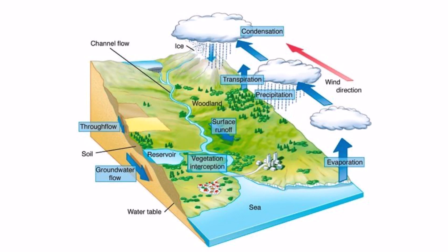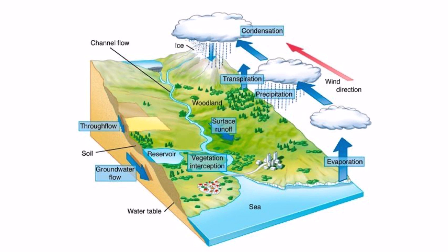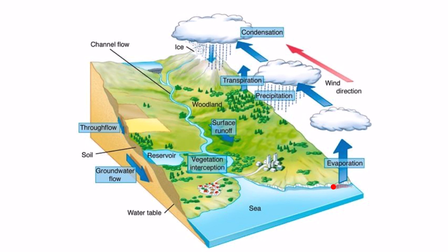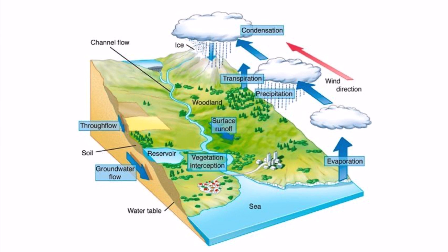It's useful to see a pictorial representation to understand how all the stores and transfers are linked. Because it's a cycle, you can start anywhere. Heat energy causes the water's temperature to rise, it becomes steam and evaporates up to form clouds. Water from clouds in the form of hail, rain, or snow are examples of precipitation. Through surface runoff, water runs over the earth's surface and due to gravity leads to rivers, lakes, and streams, returning water to the sea as a store.